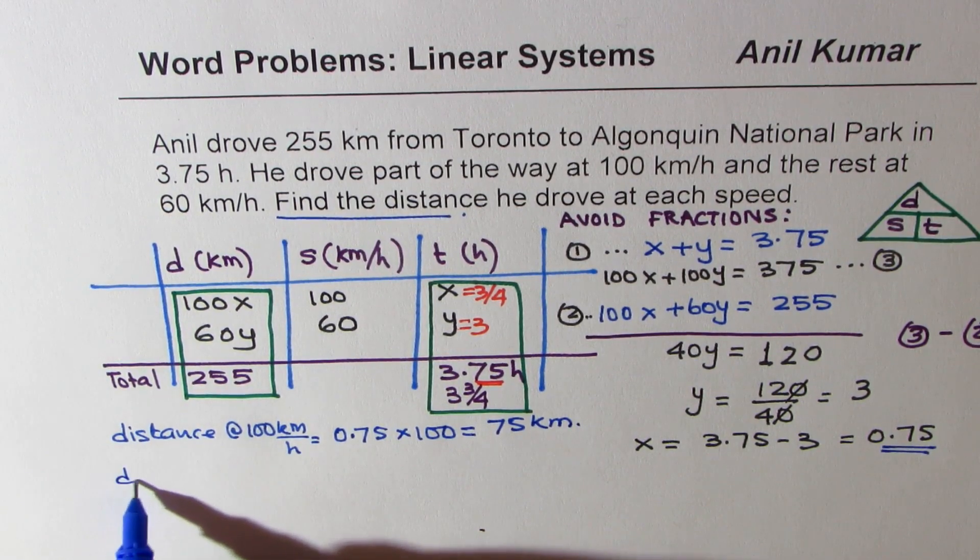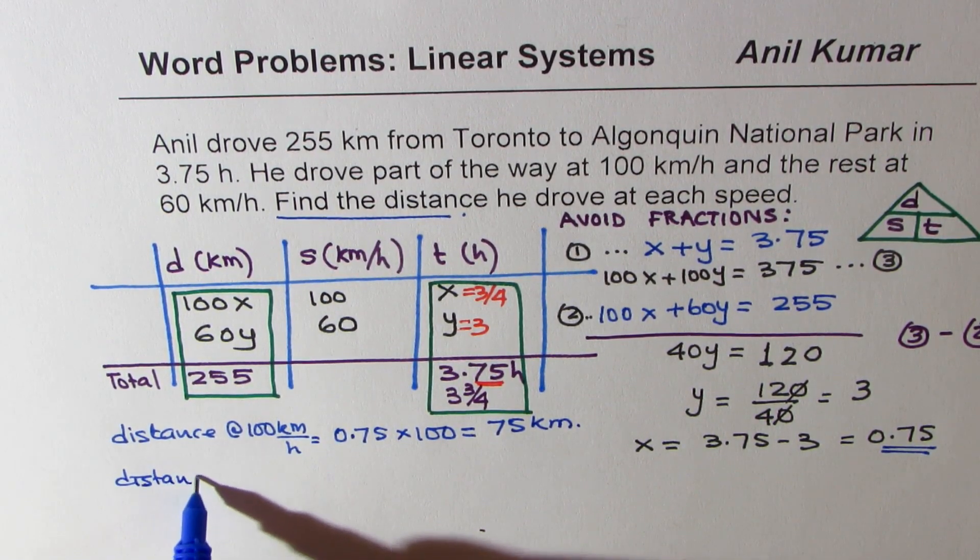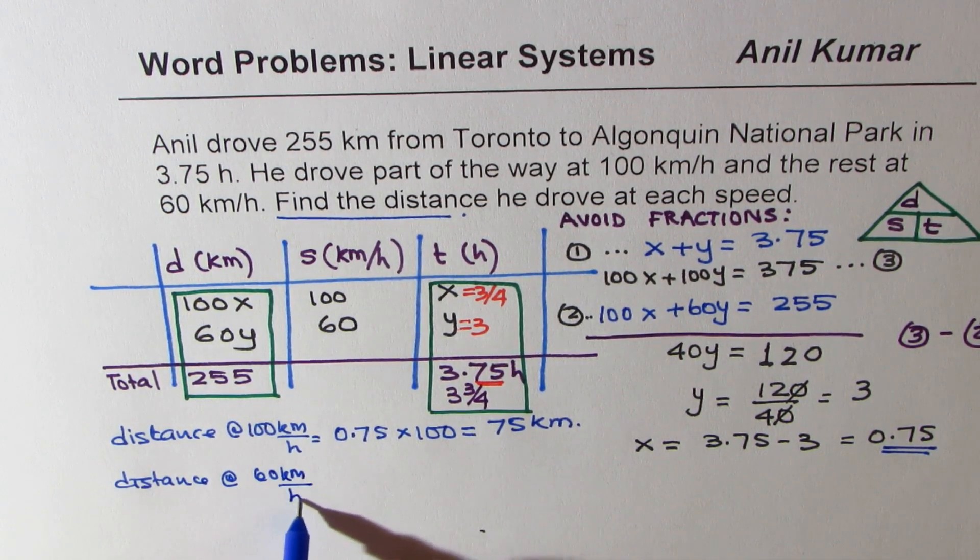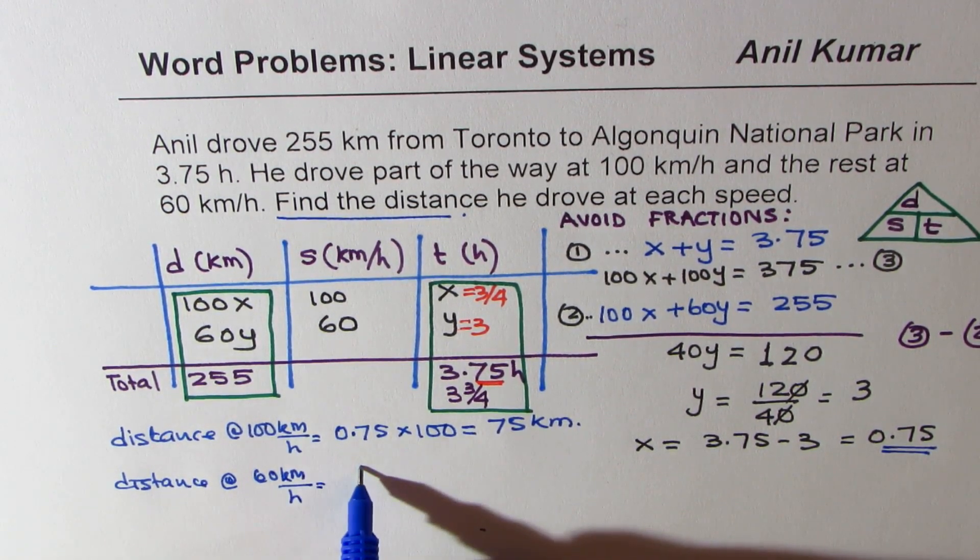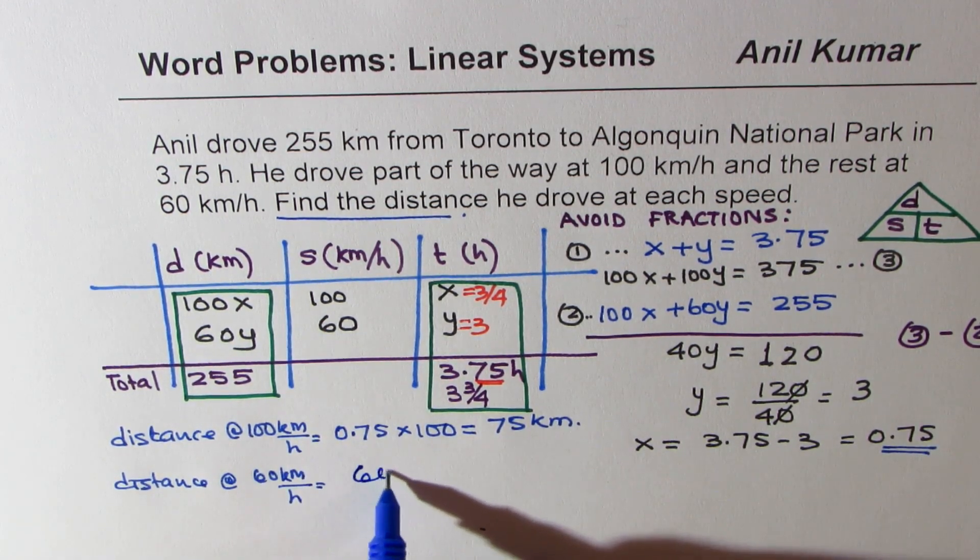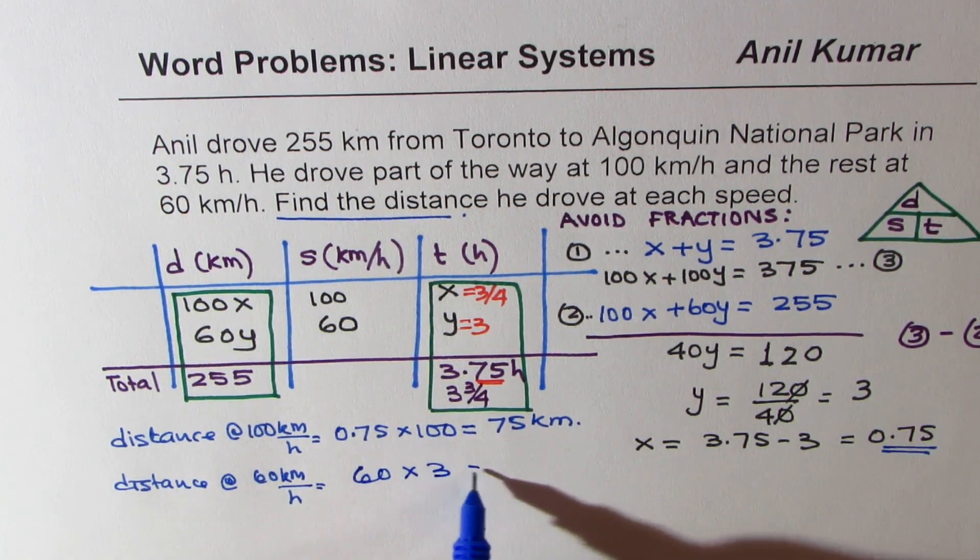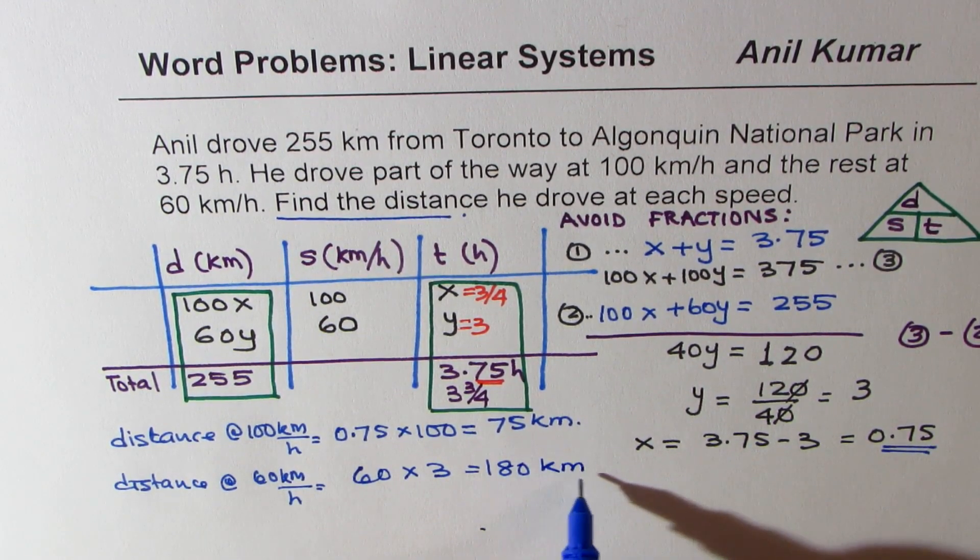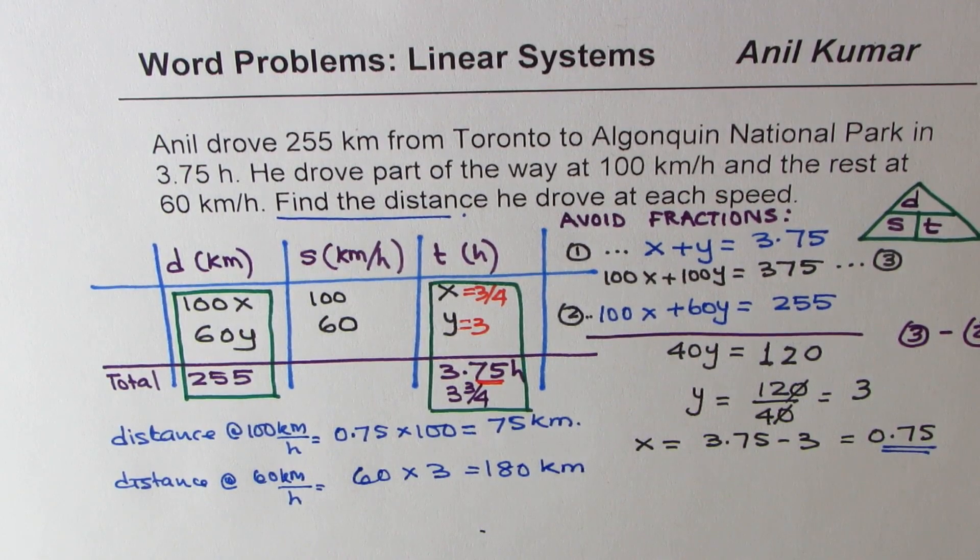And distance at 60 kilometers per hour is how much? Time taken y is 3. So it is 60 times 3, which is 180 kilometers. Do you see that?